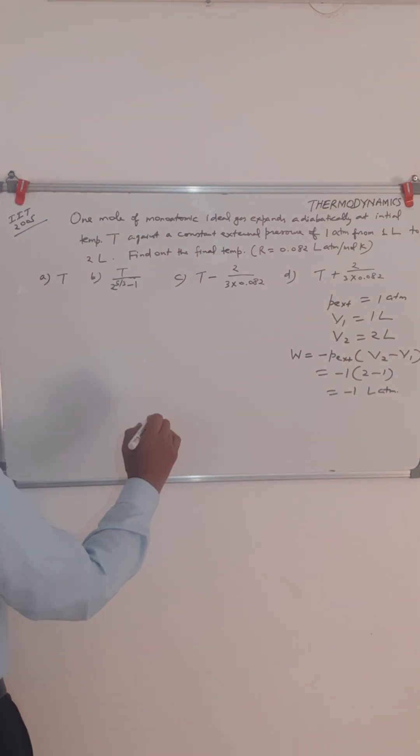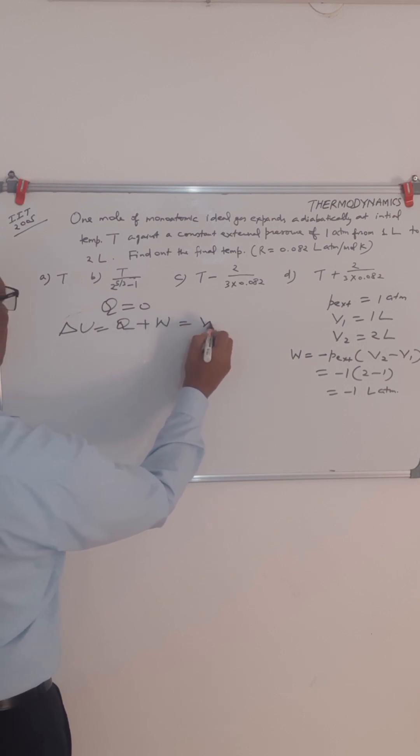Okay, this is our work done. Now, because this is an adiabatic process, we know that for adiabatic process Q equals 0. So delta U equals Q plus W as per the first law of thermodynamics, so this will become W.